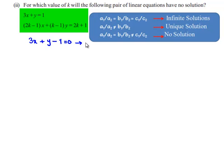Rewriting in standard form: equation 1 is 3x + y - 1 = 0, and equation 2 is (2k - 1)x + (k - 1)y - (2k + 1) = 0.